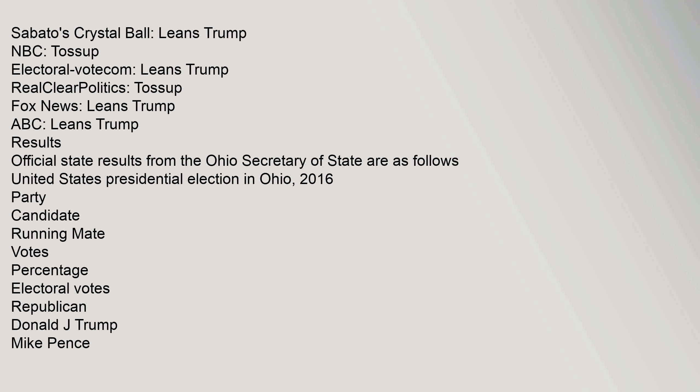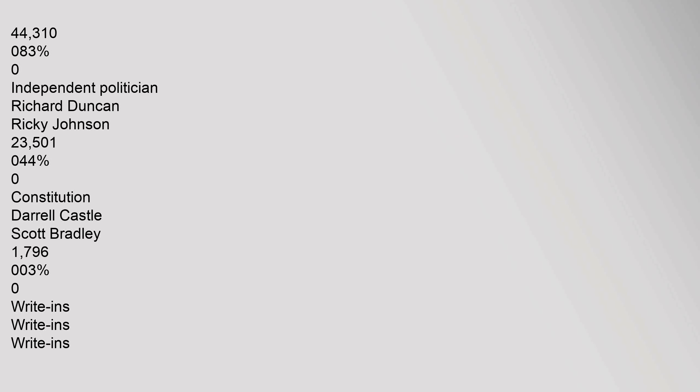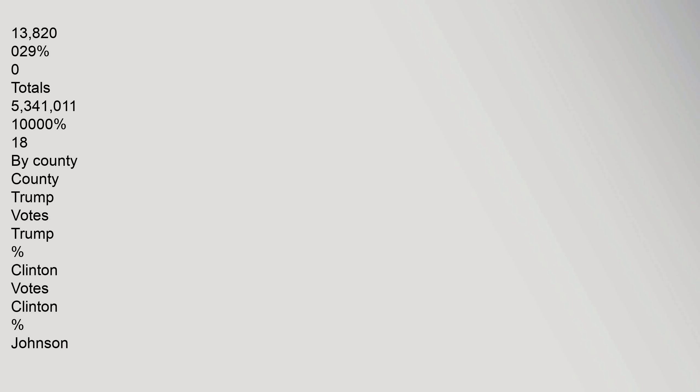Official general election results from the Ohio Secretary of State: Republican Donald J. Trump and Mike Pence received 2,771,984 votes (51.90%) and all 18 electoral votes. Democrat Hillary Clinton and Tim Kaine received 2,317,001 votes (43.38%) and zero electoral votes. Libertarian Gary Johnson and William Weld received 168,599 votes (3.16%). Green Party's Jill Stein and Ajamu Baraka received 44,310 votes (0.83%). Total votes cast: 5,341,011, with 18 electoral votes going to Trump.